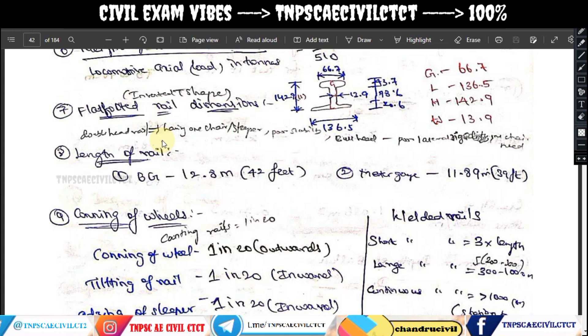The length of one rail differs between broad gauge and meter gauge. In broad gauge, the rail length is 22.8m, which is approximately 42 feet. The broad gauge length is 13 feet in older measurements.